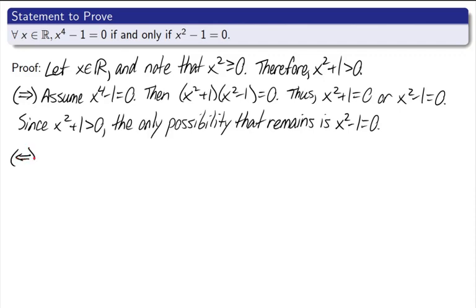For this direction, we'll be assuming that x squared minus 1 equals 0, and showing that x to the fourth minus 1 is equal to 0. Assume x squared minus 1 is equal to 0. Now what are we going to do with this? Somehow we need to recover x to the fourth minus 1. And again, while we can't use any work that we did on the previous step, or any logic that we got, we can look back and say, hey, this was a kind of useful thing to use right here. If I use this fact that was equal to x to the fourth minus 1, that could be helpful here.